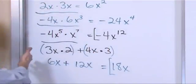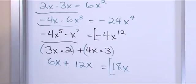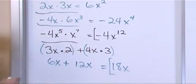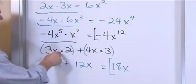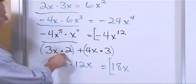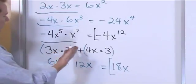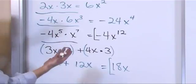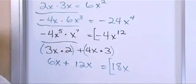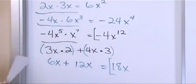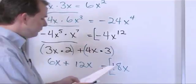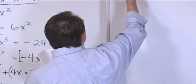You can think of parentheses around each multiplication group if it helps. When x has nothing else to multiply regarding exponents, he just comes along for the ride like before. But you can't just drop it.